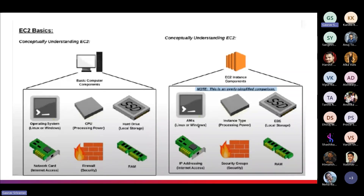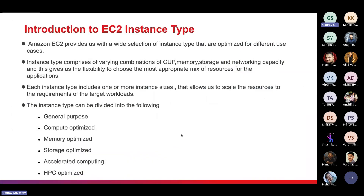In a basic computer we have a CPU; in EC2 we have instance types. In a basic computer we have a hard drive to store data; in EC2 we have EBS. For network connectivity we have IP addressing, and for security we have security groups, where we define inbound or outbound traffic rules. Finally, RAM — we use it to temporarily store actively used data.